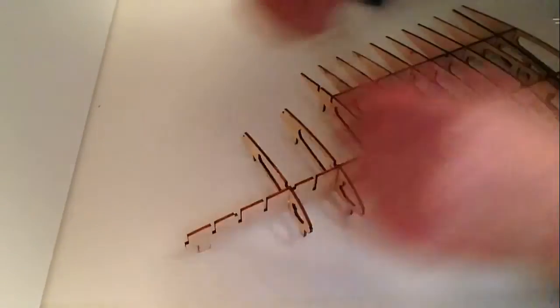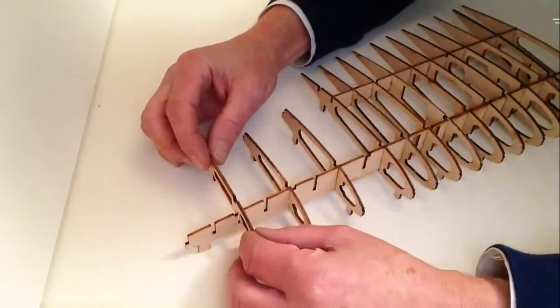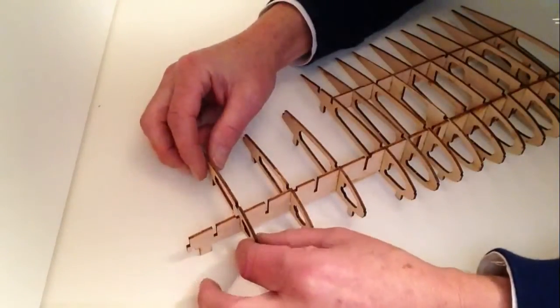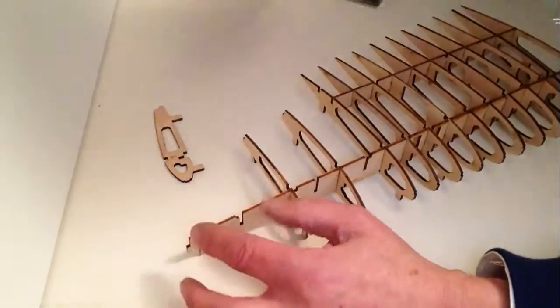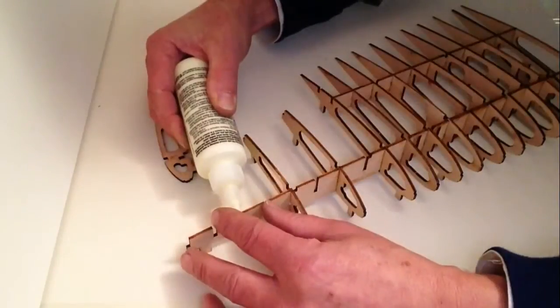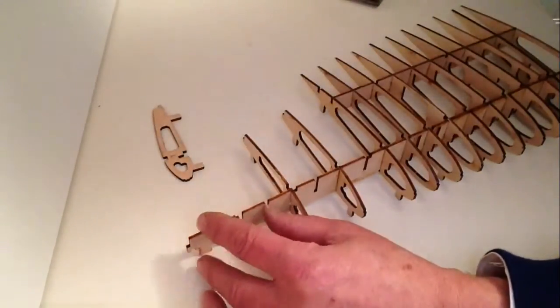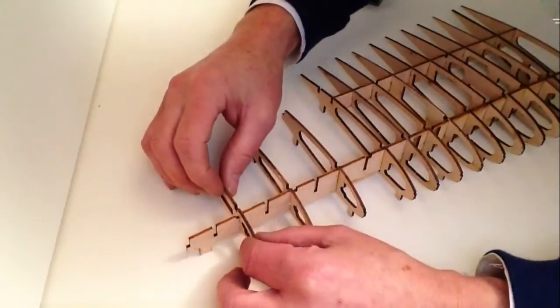Take rib number 9 and test fit it on the second notch along—you can see where that goes. Take your glue, apply some glue in the notch, and place that in there.